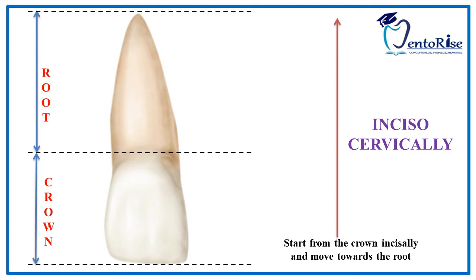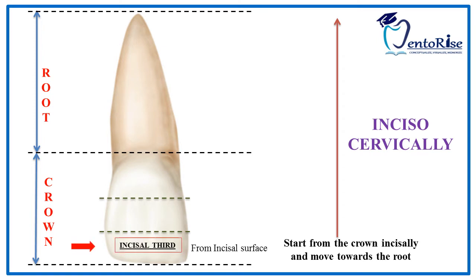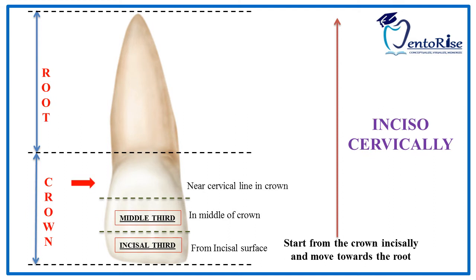Now let's see how we divide a crown and the root into thirds. First of all, as shown in the figure, divide the crown into three equal parts. The one third which is near to the incisal ridge of the tooth is called the incisal third. The one third in the middle of the crown is called the middle third. The one third which is near to the cervical line of the crown is called the cervical third. To recall, the cervical line is a line which joins the crown and the root, and is also called the cemento-enamel junction.